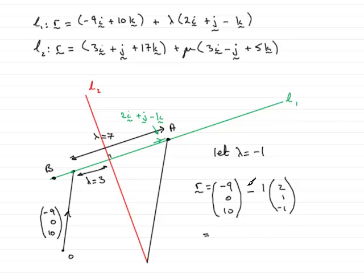you're going to find that you get minus 9 minus 2, so that's minus 11, and then 0 minus 1, that's minus 1, and 10 plus 1 is 11. So it shows now that the position vector of the point B is minus 11, minus 1, 11.